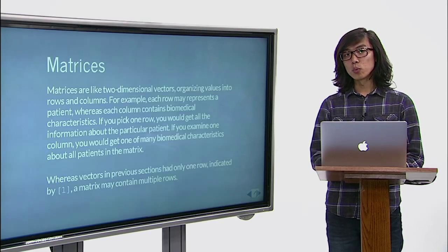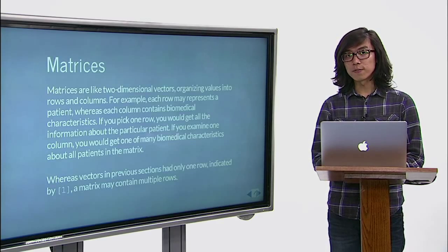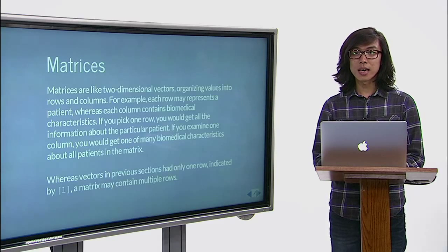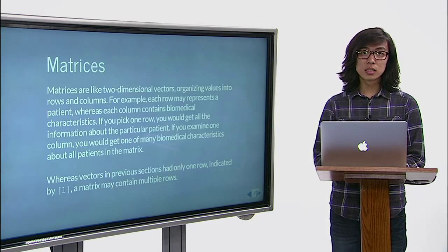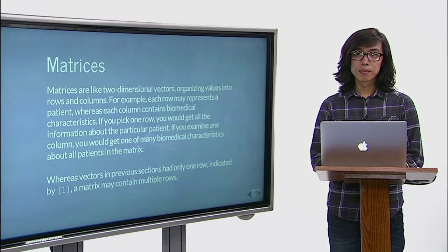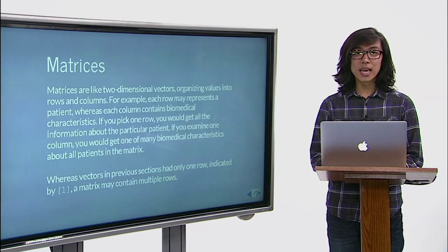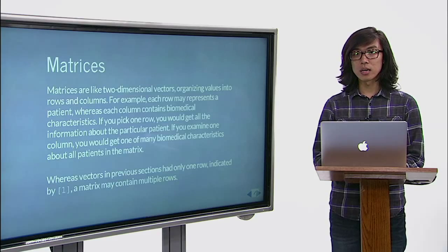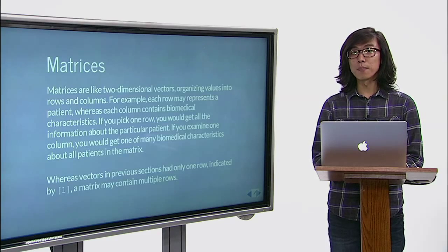Sometimes we like to combine different matrices and vectors. cbind and rbind functions stand for column binding and row binding. It could be used to combine any combination of vectors and matrices, as long as their lengths and dimensions are compatible.